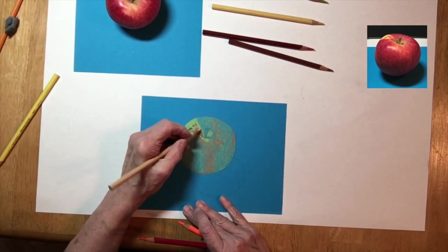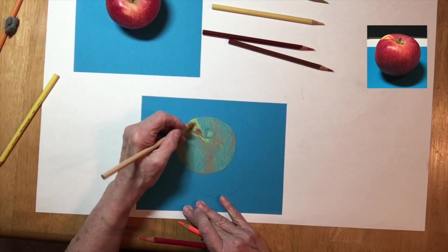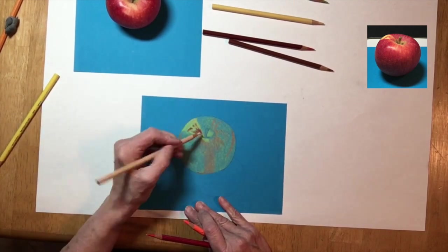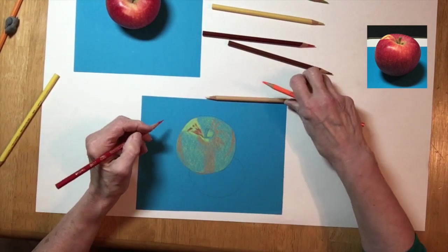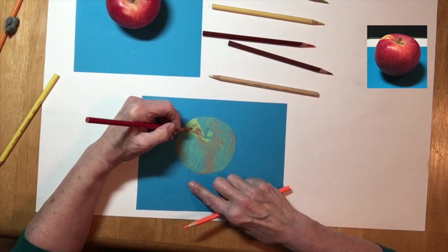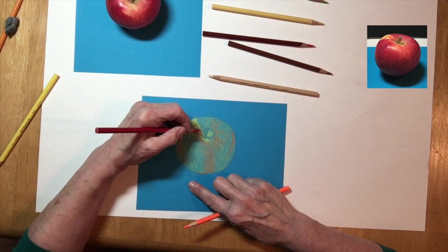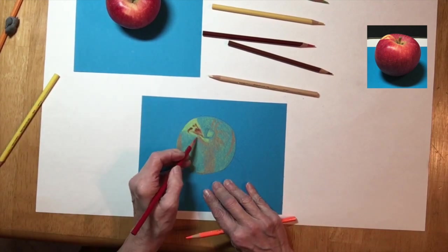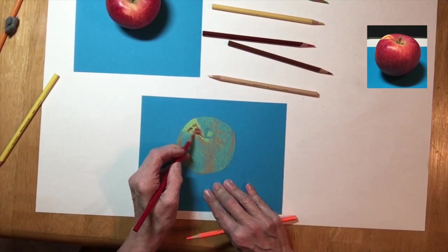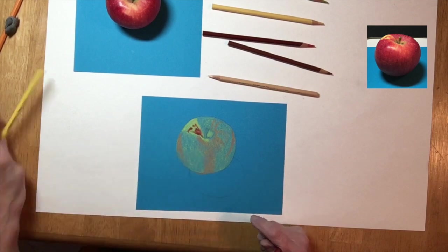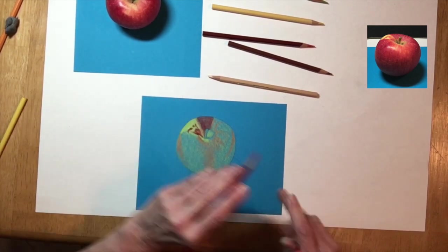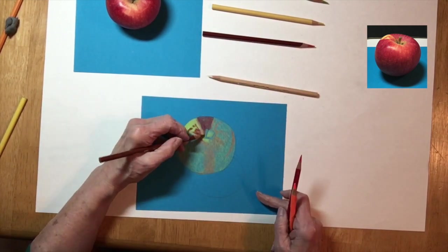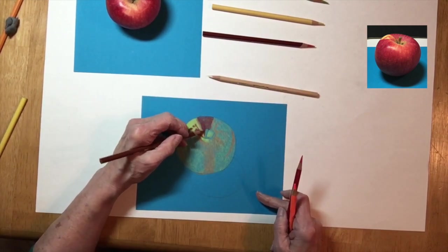You're going to see me use many different shades of red, yellow, and orange. I'm going to be burnishing, which if you remember from the other videos is using a lighter color on top of a darker color to mash up the colored pencils so it has a smoother look, but also it will lighten the value and sometimes it's a nice way to blend edges.